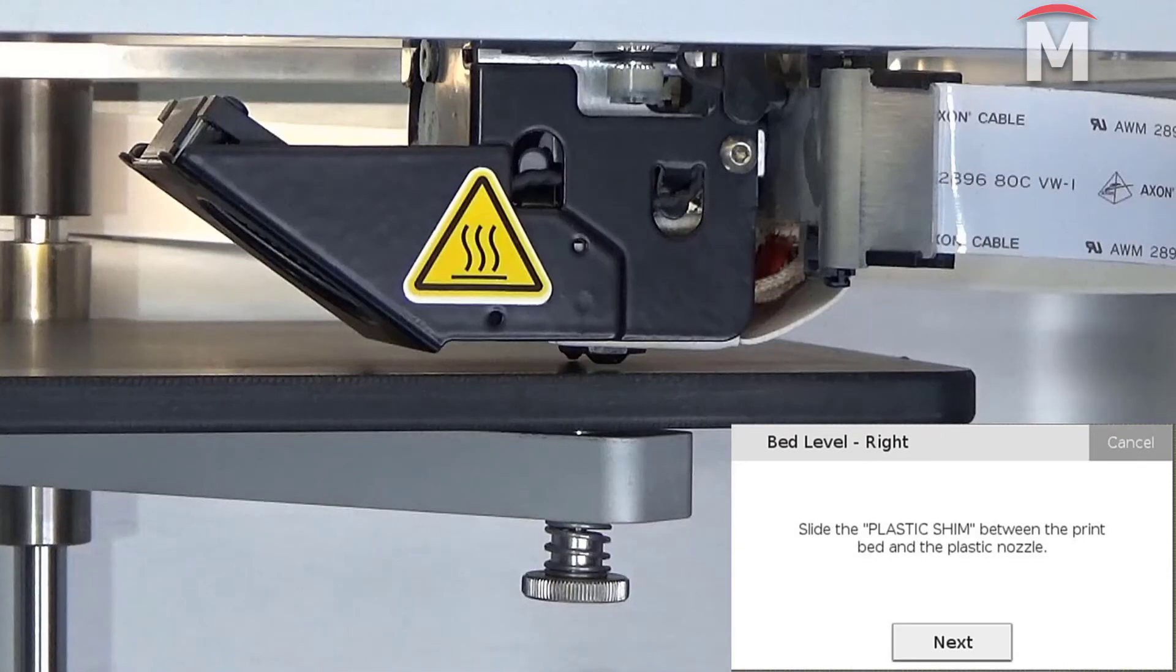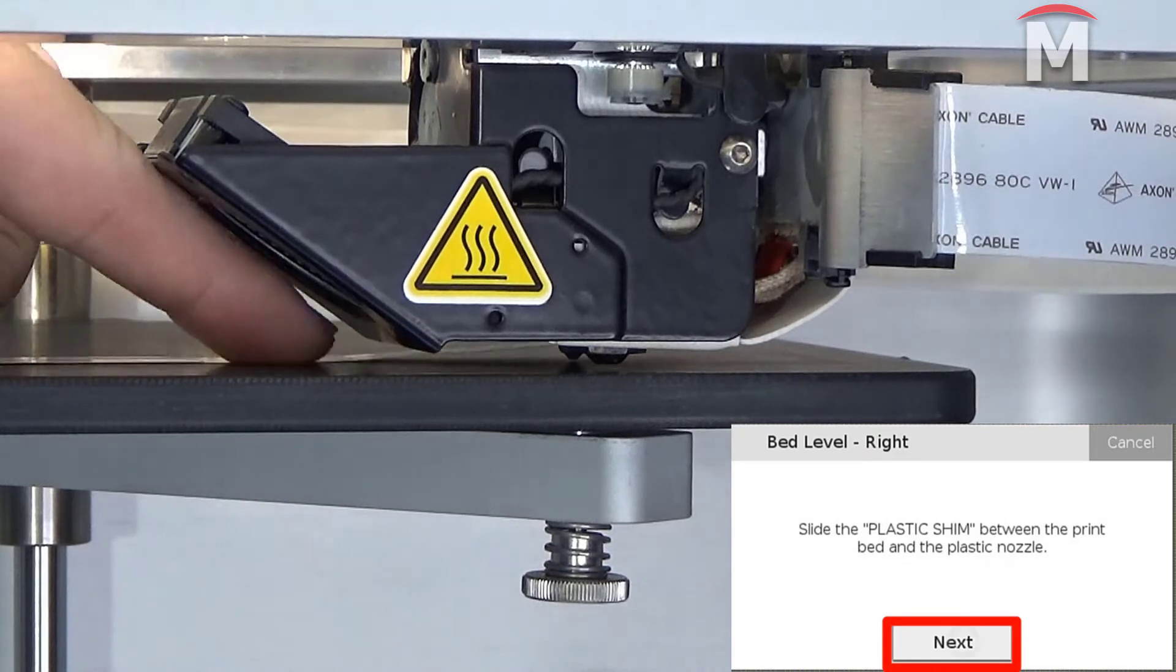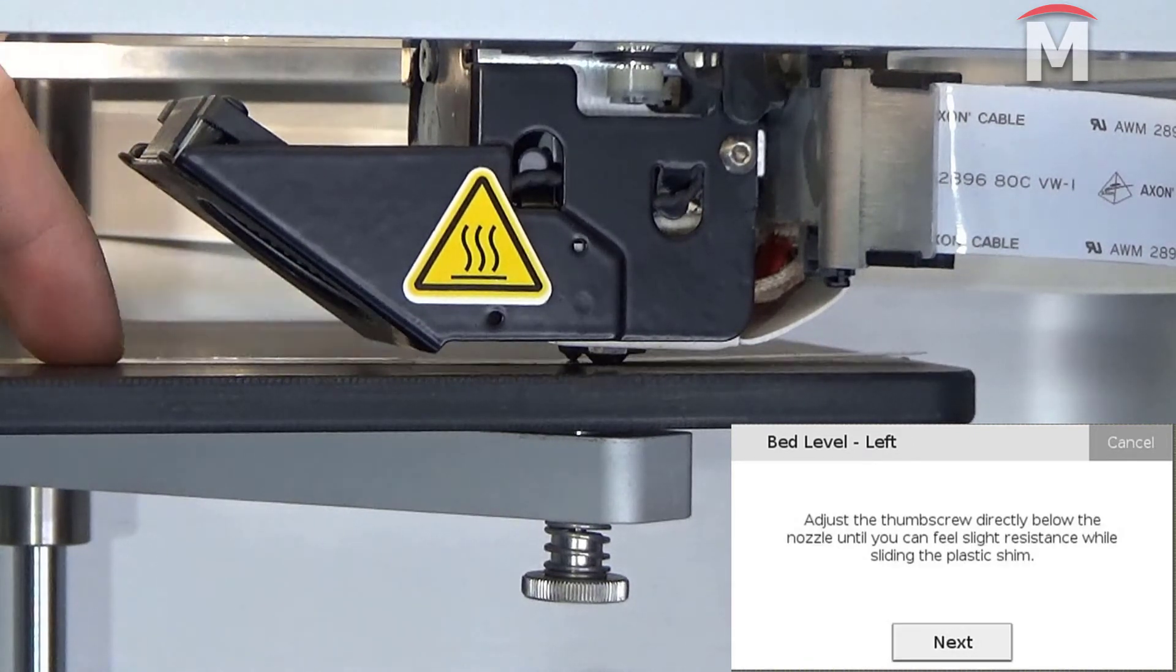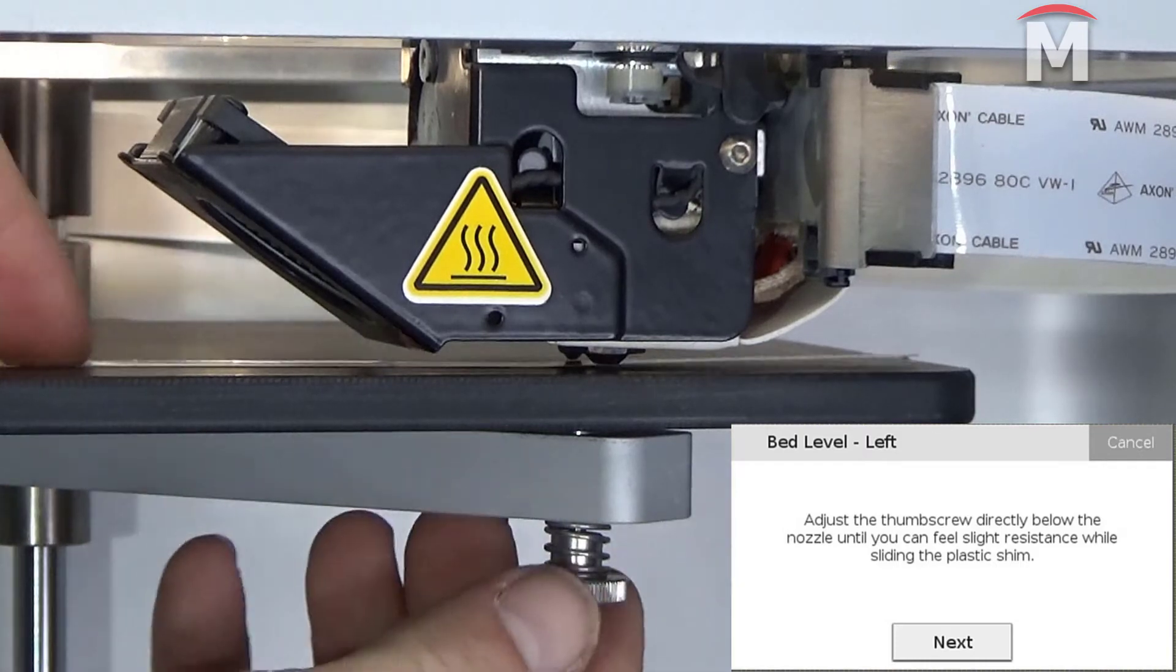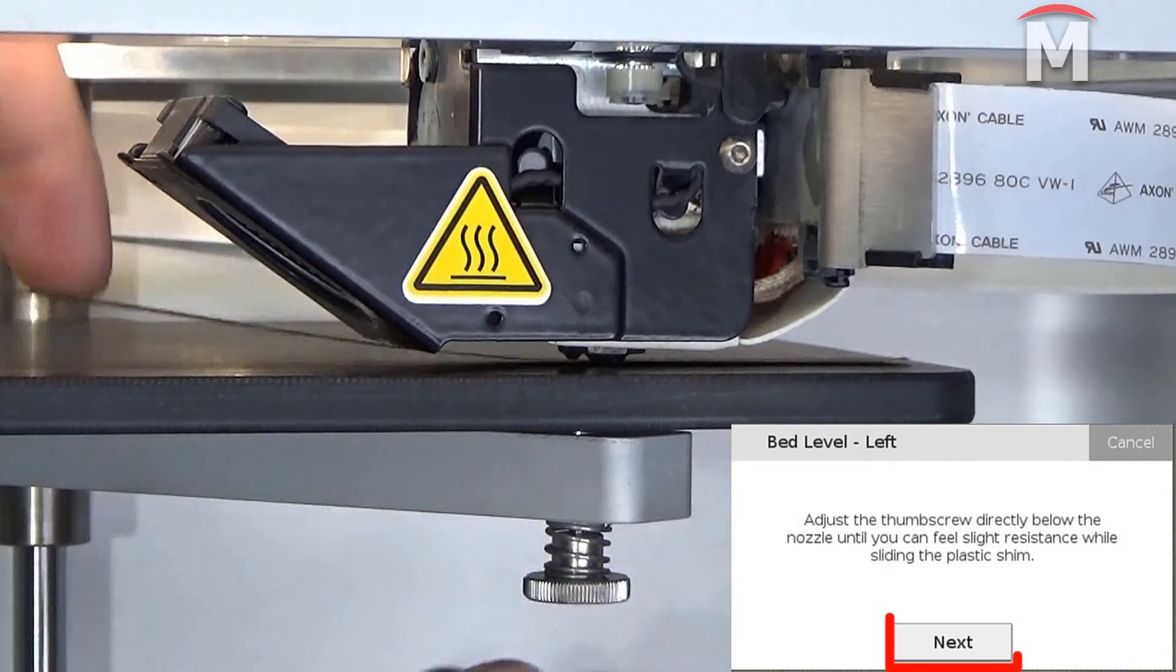When prompted, slide the plastic shim between the print bed and the nozzle and press next. We will then adjust the thumb screw until we feel a slight resistance on the shim. Once we have that slight resistance, we will press next.